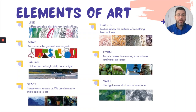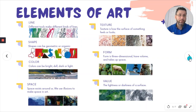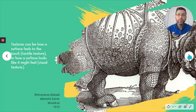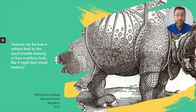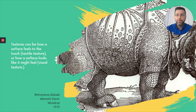So our elements of art are line, shape, color, space, texture, form, and value. Textures can be how a surface feels to the touch or how a surface looks like it feels — that's called visual texture.